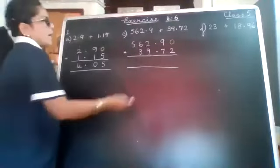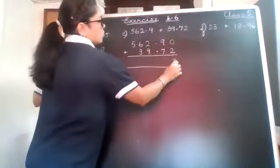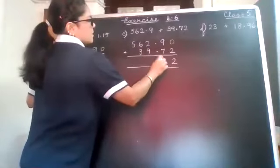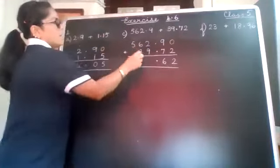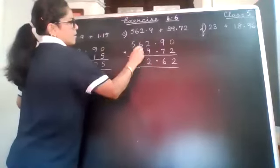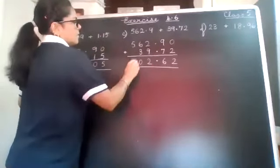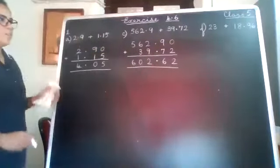Now I add like I normally add. 0 plus 2 is 2. 9 plus 7 is 16. Carry 1. 10 and 2 is 12. Carry 1. 10 again. So when you add, you will get this.